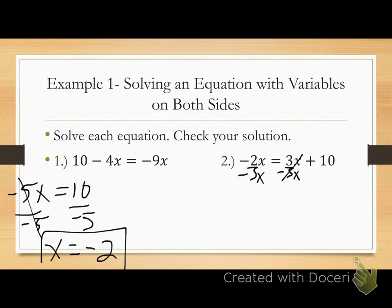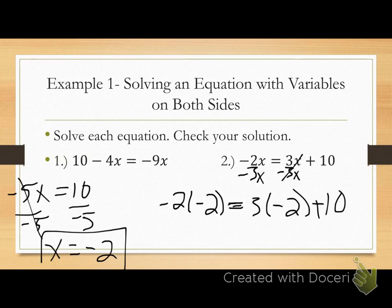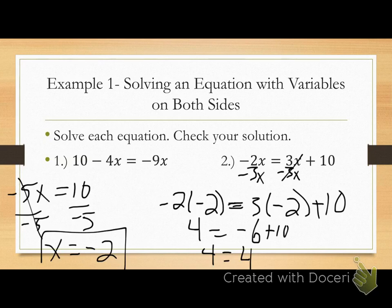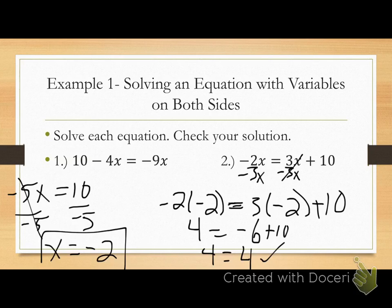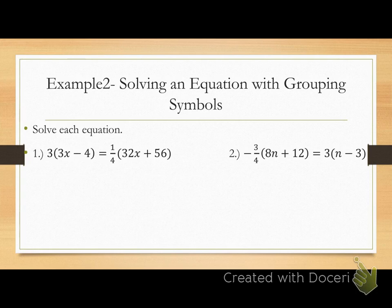Plugging in negative 2 to check: negative 2 times negative 2 equals positive 4 on the left. On the right: 3 times negative 2 plus 10, which is negative 6 plus 10, equals positive 4. True statement. Any confusion I need to clear up?